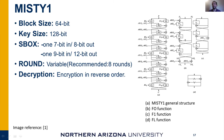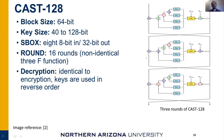CAST is another 64-bit block cipher using variable 40 to 128-bit key sizes. It has eight 8-bit-in, 32-bit-out S-boxes — about 8 KB of S-boxes — and uses three different non-identical F-functions instead of a fixed one. You can see the structure of the algorithm on the diagram.